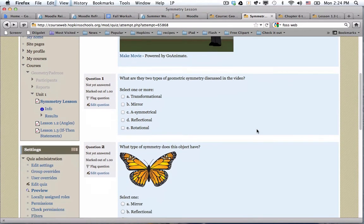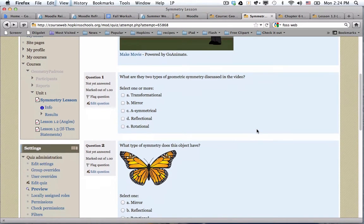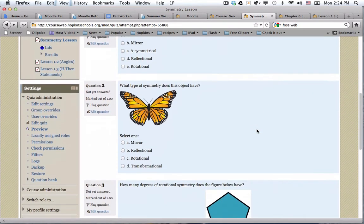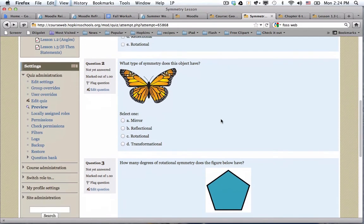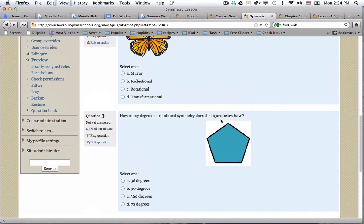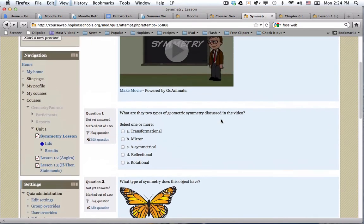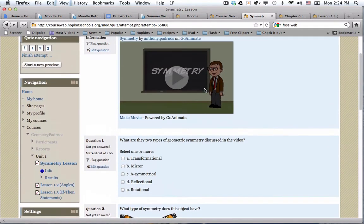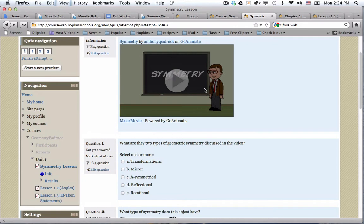And then he has five questions. Most of these are multiple choice, but in Moodle you have the ability to create a variety of different question types. As well as embedding content like the video, you can also post an image like he has in question number two and question number three. So it's a very short quiz that students would complete after watching a relatively short video.